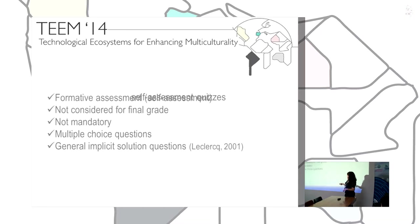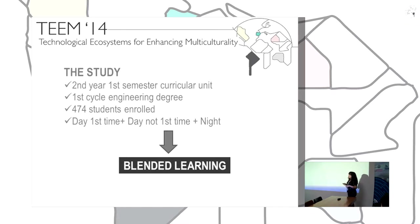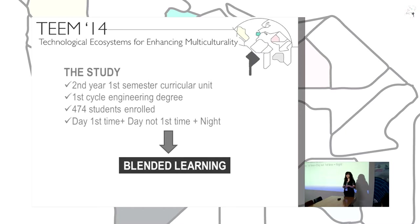We used multiple choice questions for these quizzes, specifically a special type called General Implicit Solution questions. We did this with a second-year, first-semester curricular unit — the first cycle of an engineering degree. Almost 500 students were enrolled and we divided them into three groups: students enrolled for the first time attending daytime classes, students who had failed the course the previous year also attending during the day, and students attending classes at night.